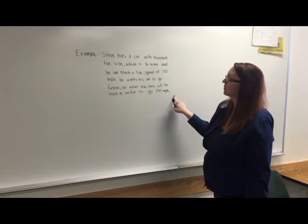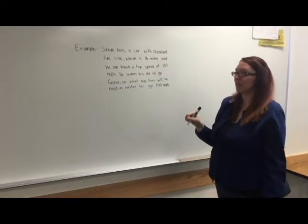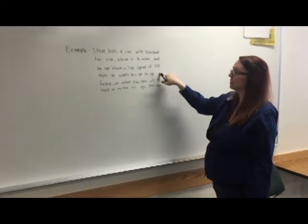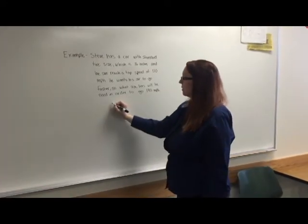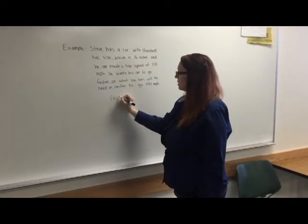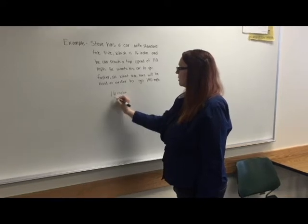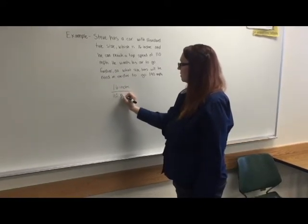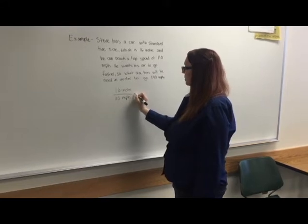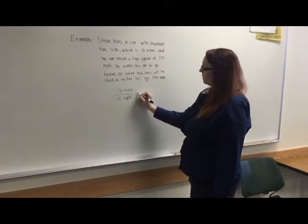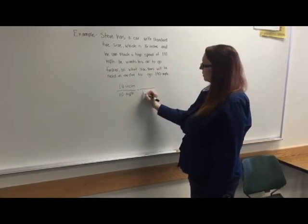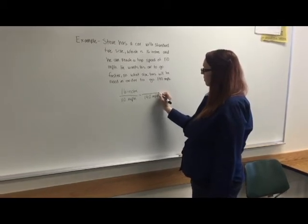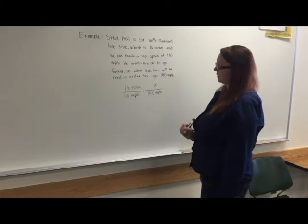So we learned about ratios the other day, and we're just going to set up a ratio of tire size to miles per hour. We know a standard is 16 inches, and he can go 110 miles per hour. So if Steve wants to go 140 miles per hour, what size tire will he need?